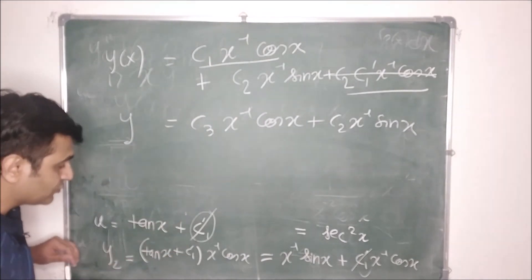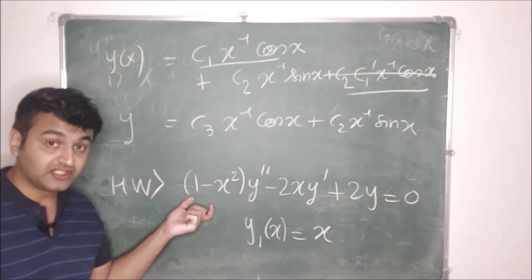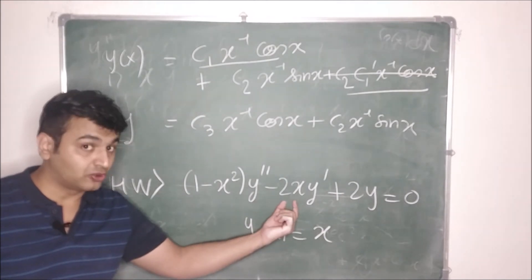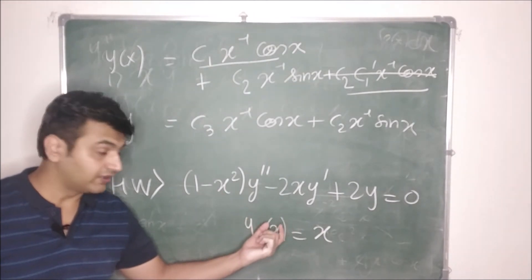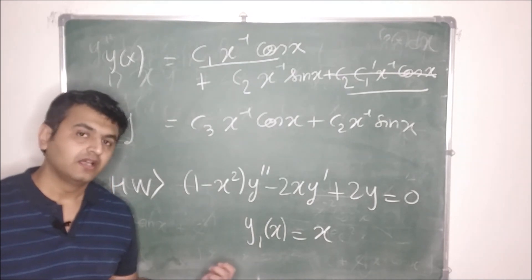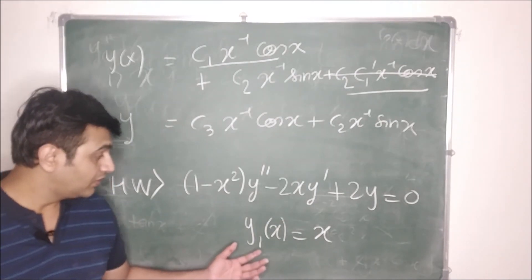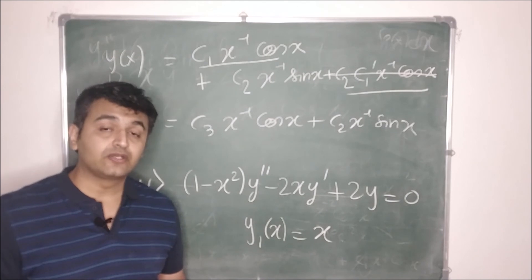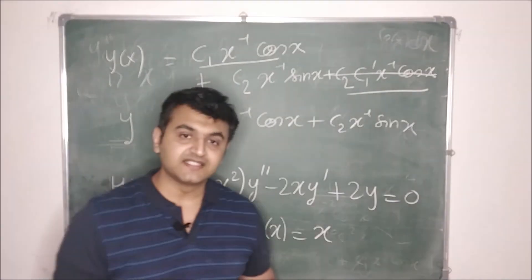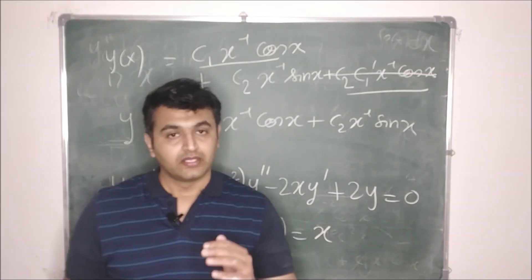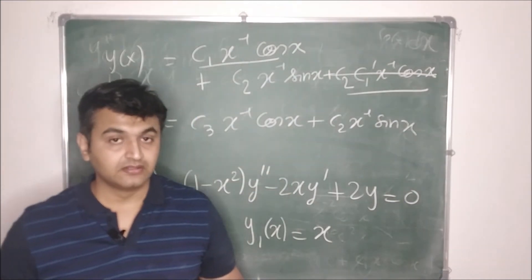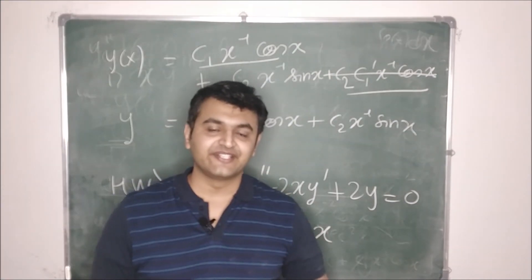For homework, a new differential equation is given — make sure to divide through so the coefficient of y'' is 1, so p is not −2x. Find y2 and the general solution and post your answers in the comment section. In the next lecture, the remaining two reduction methods will be covered. Hope you liked this video — have a nice day!